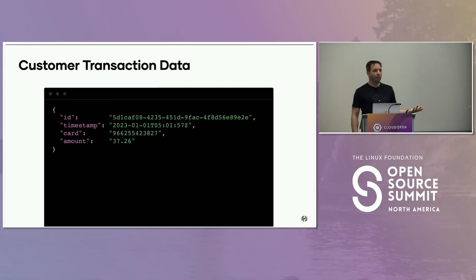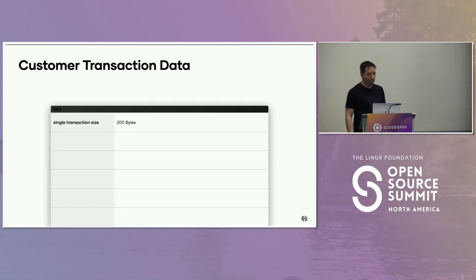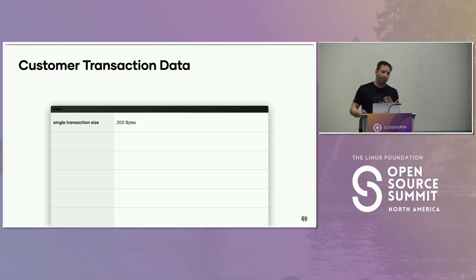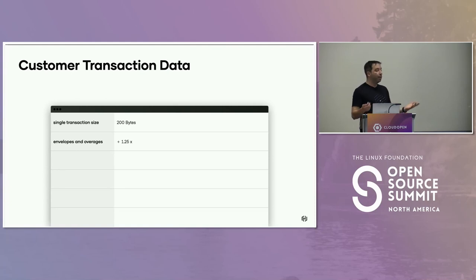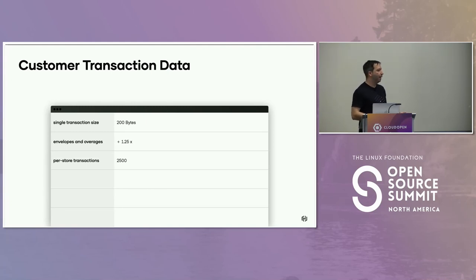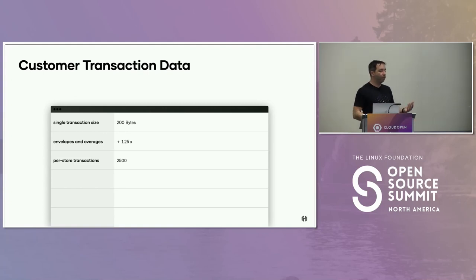These transactions are 120 to 200 bytes — nothing big. Even using UTF-16, it's still not a lot. One megabyte is good for about 4.1K transactions, and with a 25% factor on top for envelopes, we want to make sure we have enough storage. Per store, average 2.5K transactions a day — of course hypermarkets much more, small ones much less. Average is always a lie, but 2.5K is what we worked with and it worked for us.